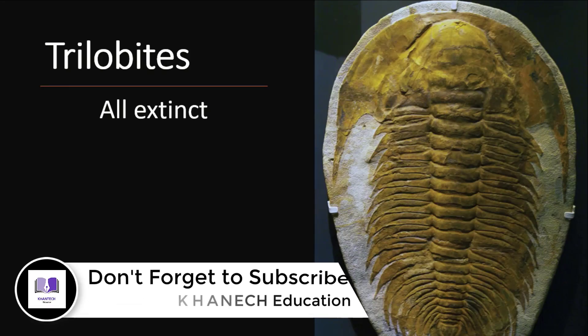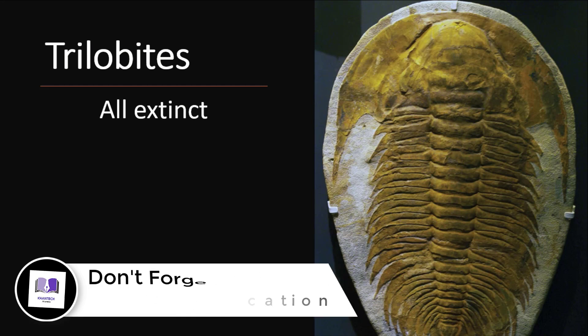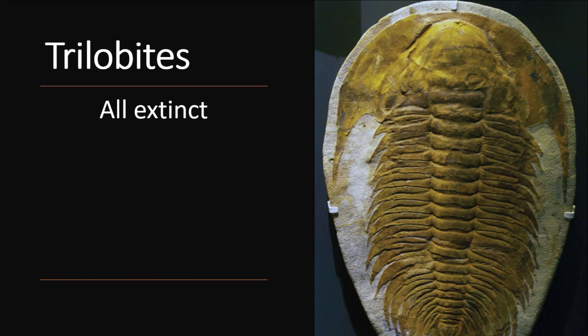The first one is class Trilobites. Trilobites are three-lobed arthropods. Many arthropods were included in this group, with three lobes present. However, they are all extinct — there are no living species in this group.